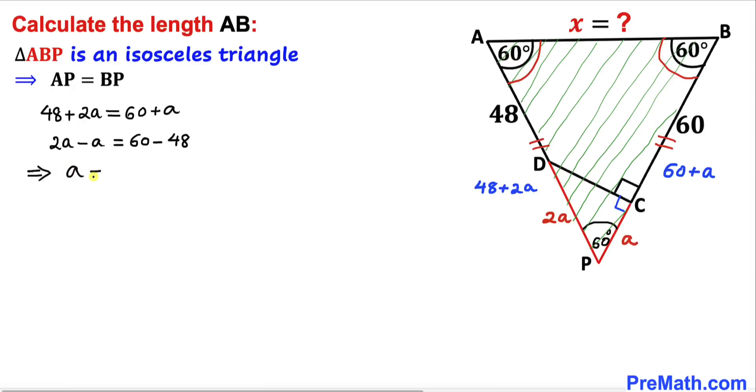And DP is 2 × 12 = 24 units, so the total side